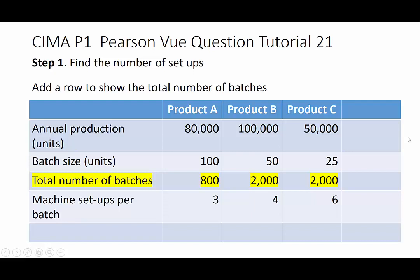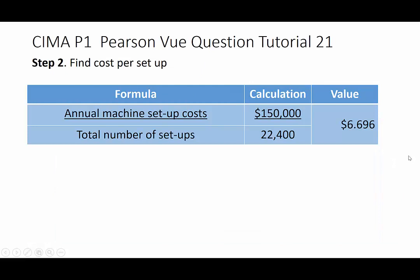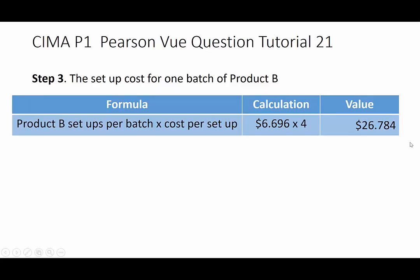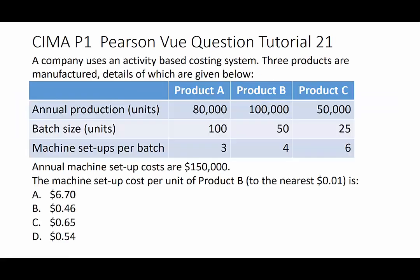We add an extra row for the number of batches: 800 batches of A, 2,000 batches of B, and 2,000 batches of C. The total setups are 2,400, 8,000, and 12,000 respectively, giving a total of 22,400 setups. Dividing the $150,000 cost by 22,400 gives a setup cost of approximately $6.70. Multiplying that by the setups needed for a batch of product B gives $26.78, and dividing by the 50 units in that batch gives a unit cost of approximately 54 cents.